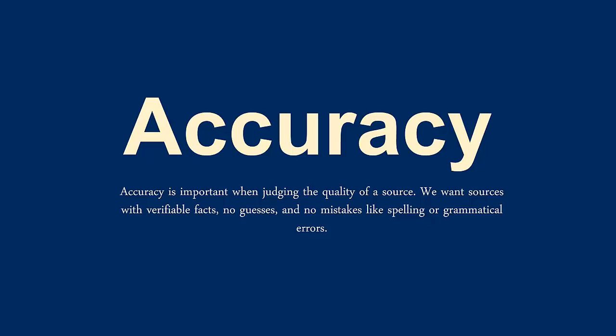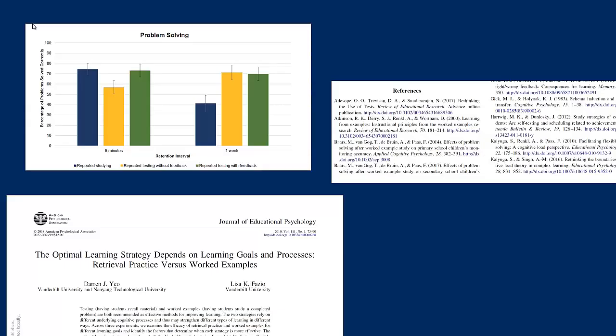Accuracy. Accuracy is about verifying the information in a source. Look for errors or statements you know to be false. Check for warning signs like broken links, misspelled words, poor grammar, and sensational language. And instead look for sources with quotes, data, and references to experts. Scholarly sources will generally include a list of references at the end of the article. Charts or tables should clearly label where the data came from. Look for other sources that can corroborate the information in the source you are evaluating. Consider if the source was peer-reviewed or edited.